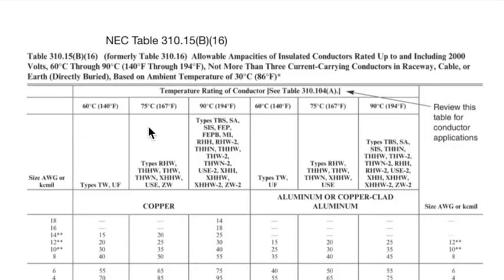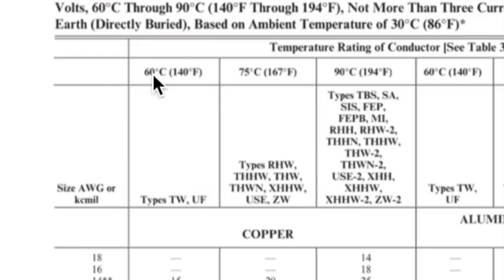These are your insulation types. We're going to talk more about that in one second, but I want you to see that each type of insulation is given to a certain temperature rating. 60 degrees Celsius, 75, and 90. THWN is good to 75. THHN is good to the 90, and TW is good to 60. Important to recognize that.